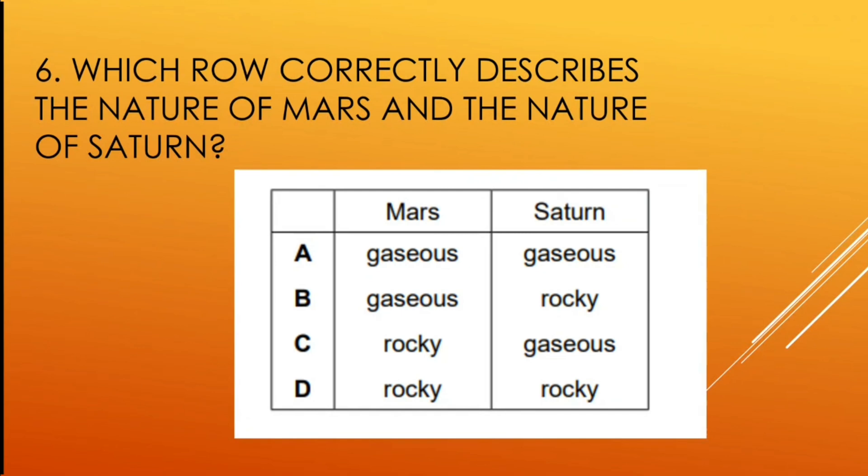In this question, which row correctly describes the nature of Mars and the nature of Saturn? And the correct option is option C. That is, Mars is rocky whereas Saturn is gaseous.